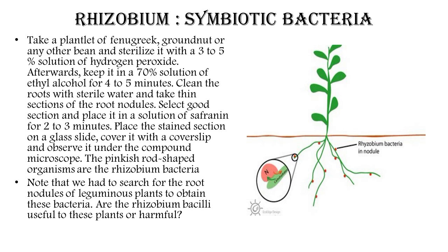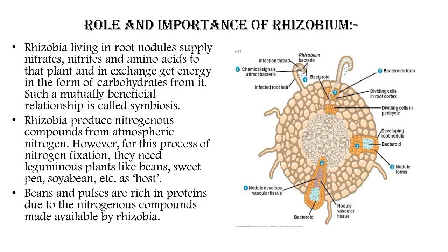We learn about this bacteria — it is Rhizobium, a symbiotic bacteria. Rhizobium living in root nodules supply nitrates, nitrites, and amino acids to the plant, and in exchange get energy in the form of carbohydrates from it. Such a mutually beneficial relationship is called symbiosis. You should remember this term: symbiosis.